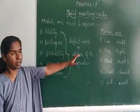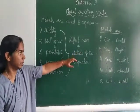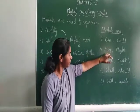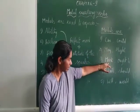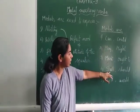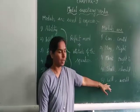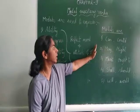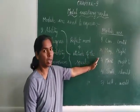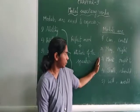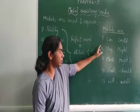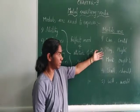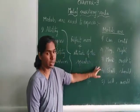Now let us see what the basic Modals are. The modals are: can, could, may, might, must, ought to, shall, would, and will. These are the Modals that we use as auxiliary or helping verbs along with the main verbs. Now let me explain what each of these expresses — what can expresses, what could expresses — and explain all of these in detail.